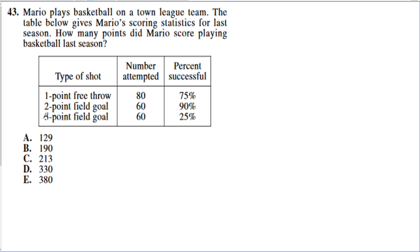Problem 43: Mario plays basketball on a town league team. The table shows his scoring statistics for last season and asks how many points he scored all season. He made 80 free throw attempts at 75% success, 60 two-point attempts at 90% success, and 6 three-point attempts at 25% success. We need to multiply the number of attempts by the percent as a decimal — 0.75, 0.90, and 0.25.